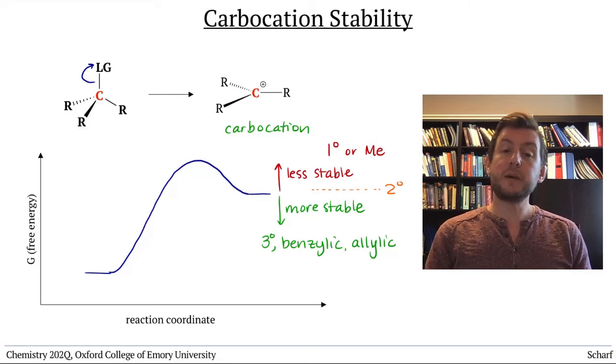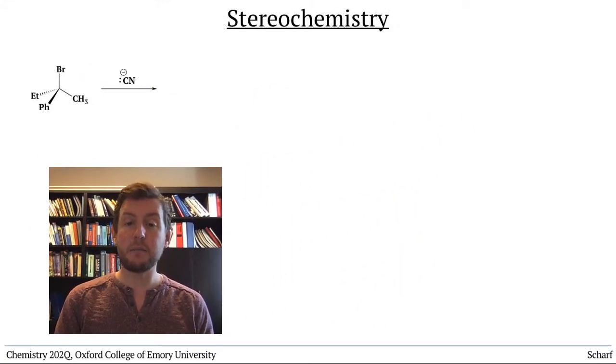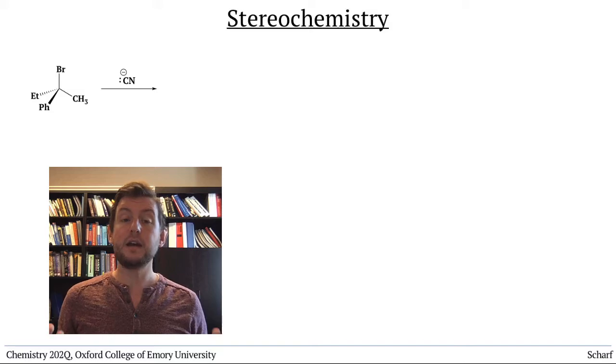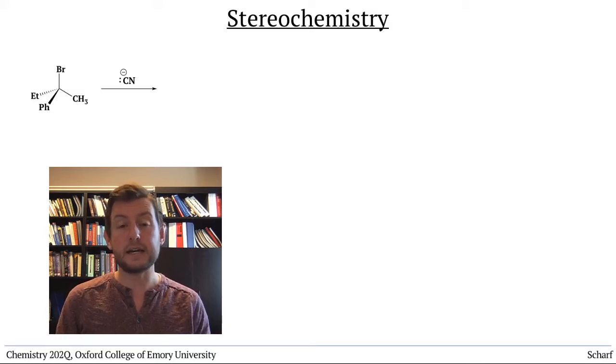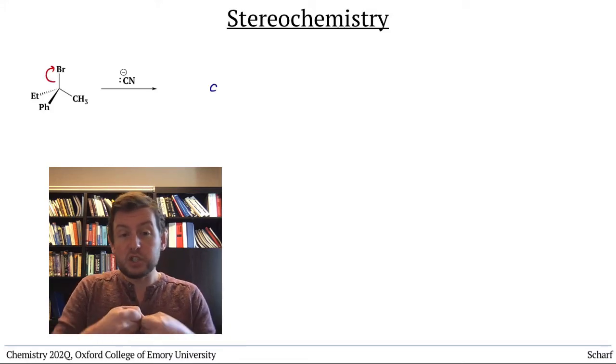The final aspect of the SN1 reaction that we'll discuss is its stereochemical outcome. Let's illustrate this with a tertiary chiral alkyl halide reacting with cyanide. When the leaving group just leaves, it leaves behind this carbocation.